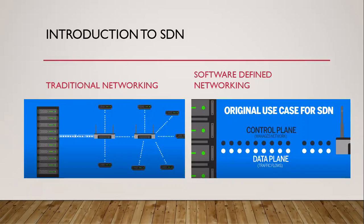One more thing — SDN is being used in-band to control how enterprises connect to their branch offices. This use case is called SD-WAN, and it uses software to aggregate multiple types of network connections such as broadband, MPLS and wireless to create strong and cost effective solutions.